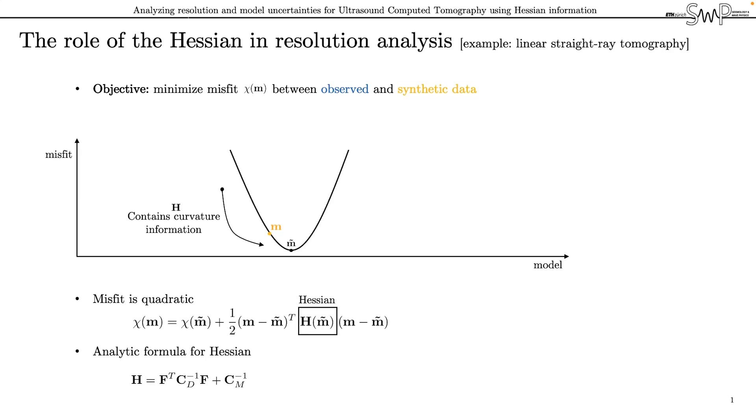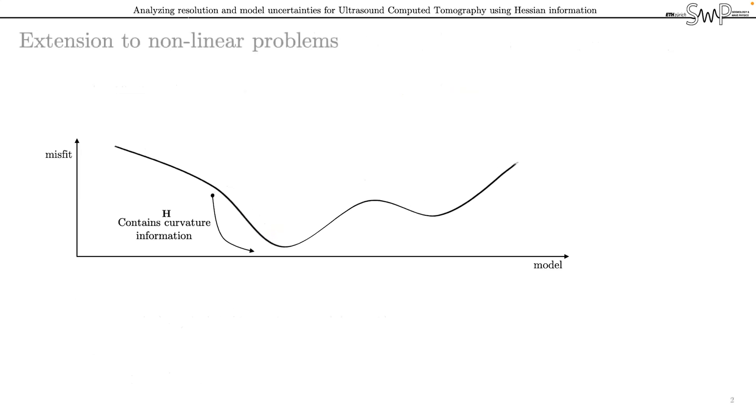The big question is now, can we use the same framework to analyze the resolution in full waveform tomography? Unfortunately, the answer is no. Since full waveform inversion is non-linear in the model parameters, the misfit is not quadratic anymore and may look, for instance, more like this. A consequence of this non-quadratic misfit is that there exists no analytic formulation for the Hessian and therefore an analytical assessment of model uncertainties is generally not possible.